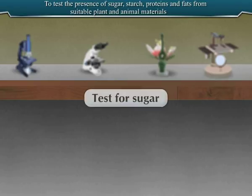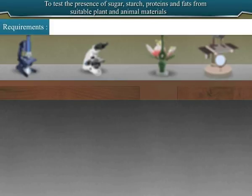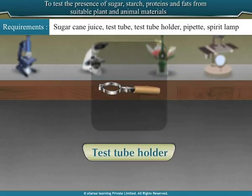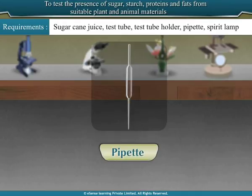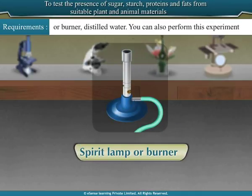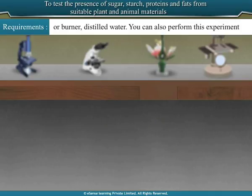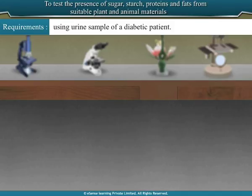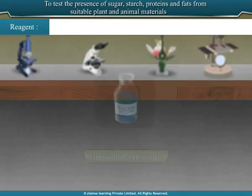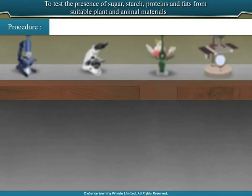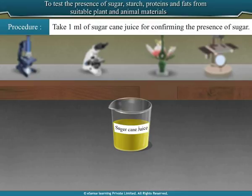Test 1: Test for sugar. Sample used is sugarcane juice. Materials required: test tube, test tube holder, pipette, spirit lamp or burner, and distilled water. You can also perform this experiment using a urine sample of a diabetic patient. Reagent: Benedict's reagent, which is commercially available.